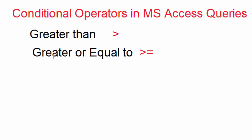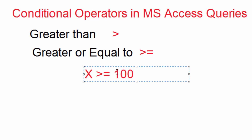For example, I can say: check if x is greater than or equal to 100. In this case I'm using this conditional operator >= to check if what is in x is equal to or greater than 100. If it is true the result will come out as true; if it is false the result will come out as false.